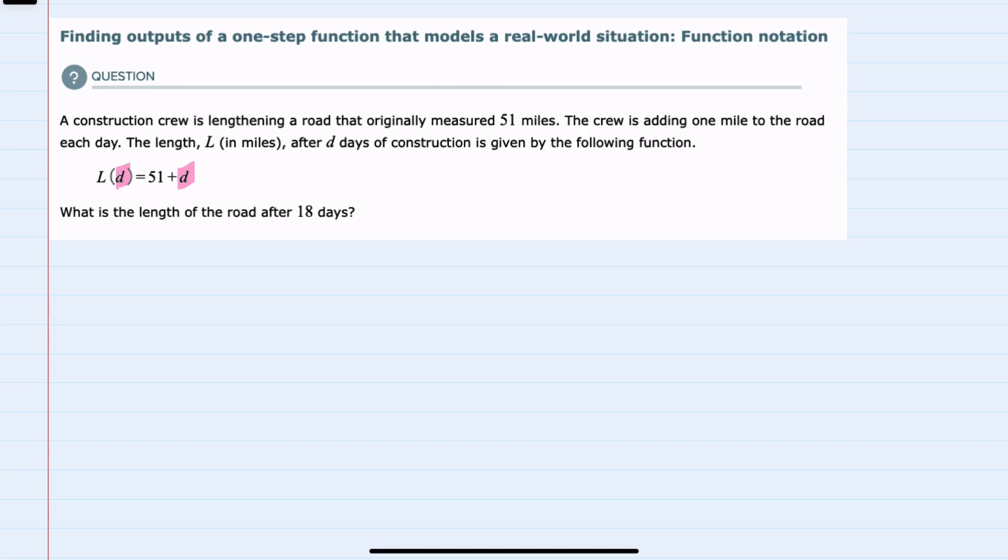In this example, we're asked for after 18 days. So the length after 18 days, using function notation here, we would replace the d with 18. So we would have 51 plus d, which is 18 days after construction. We can then simplify by doing the addition and find 69 is the number of miles after 18 days of construction.